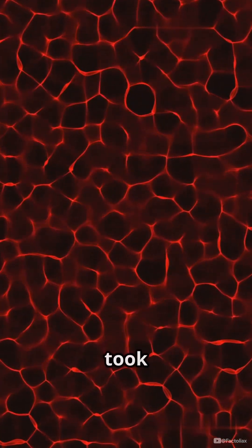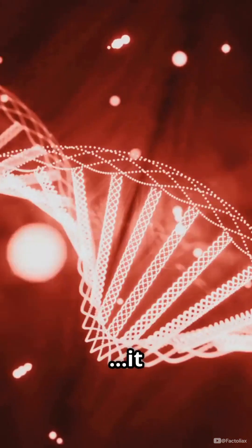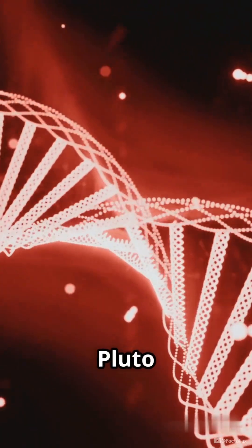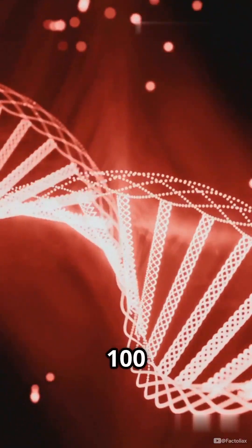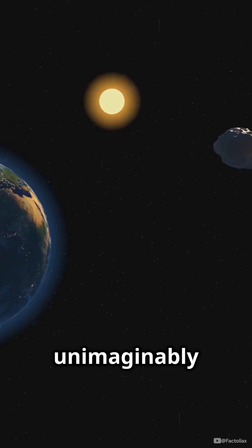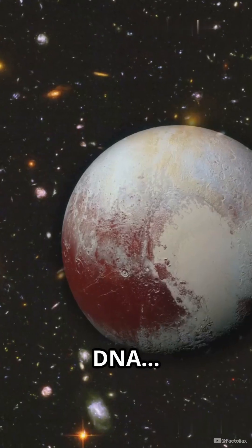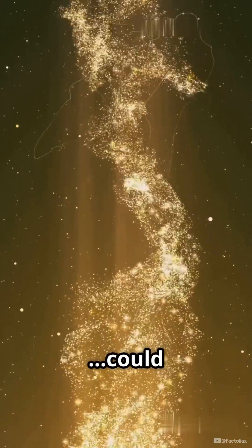Here's something insane: if you took all the DNA in your body, uncoiled it and lined it up, it would stretch from the sun to Pluto and back not once, not twice, but over 100 billion times. That's how microscopic yet unimaginably long our genetic code really is.